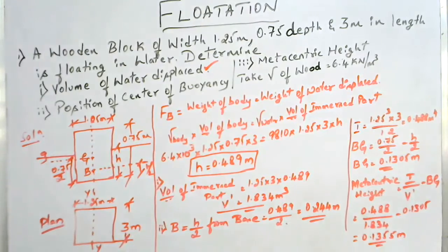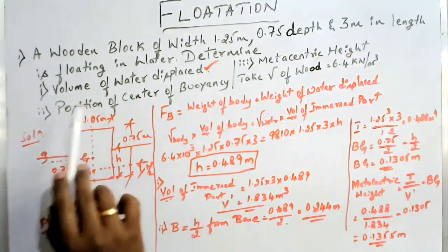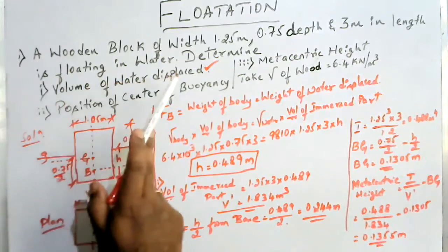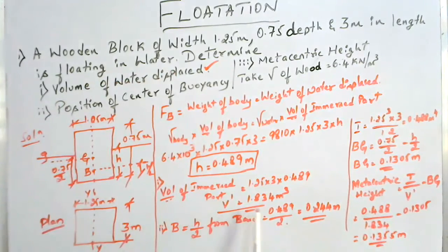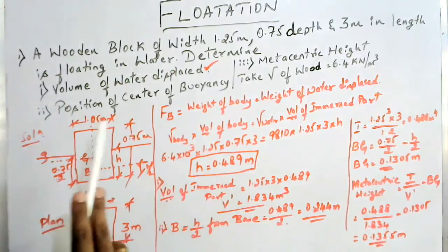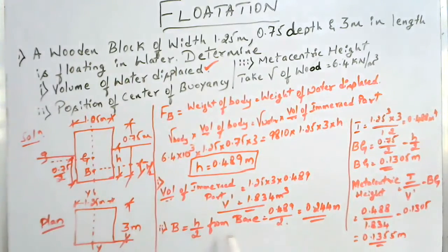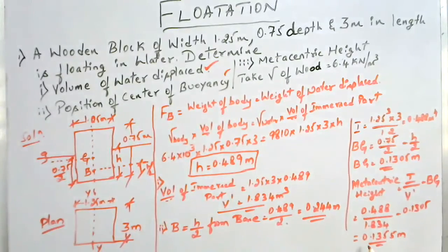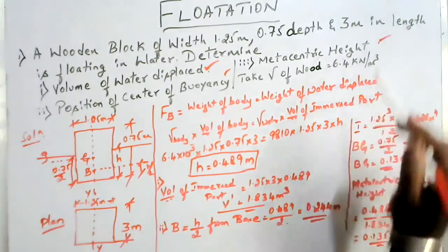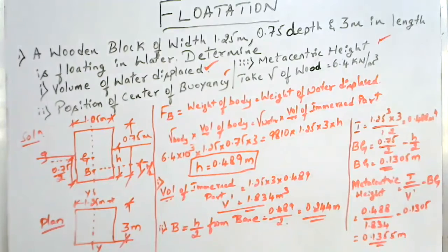So we have found all three answers: volume of water displaced, V-dash, is 1.834 cubic meter; position of center of buoyancy is h by 2 from the base, that is 0.244 meter; and the metacentric height works out to be 0.1355 meter. This is how you solve the problem on floatation.